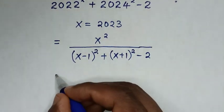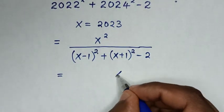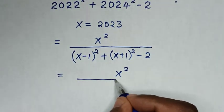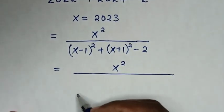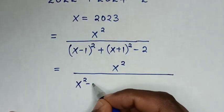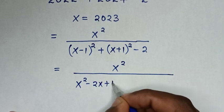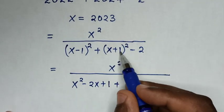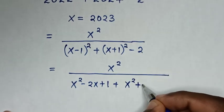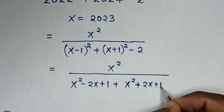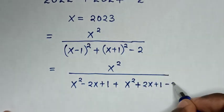Then in the next step, it will be equal to x square over... We expand x minus 1 bracket square, so it will be x square minus 2x plus 1, then plus... We expand x plus 1 bracket square, so it will be x square plus 2x plus 1, then minus 2.